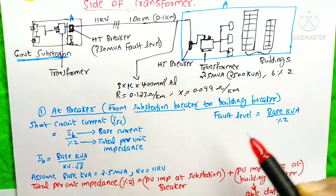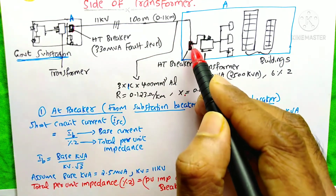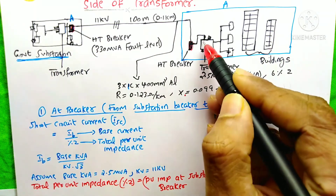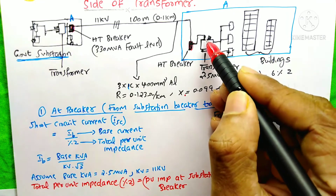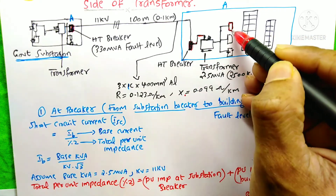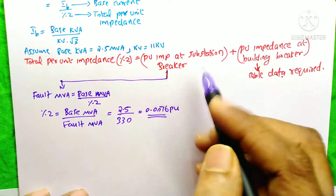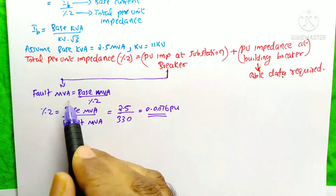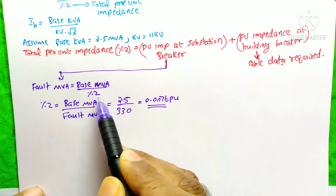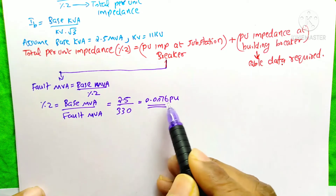I am calculating the short circuit current and fault level of this particular building breaker. Since I already have the fault MVA of the HT breaker (330 MVA), I use the equation: per unit impedance = base MVA / fault MVA = 2.5 MVA / 330 = 0.0076 per unit. This gives the per unit impedance at the substation breaker. Now I will calculate the per unit impedance at the building breaker.